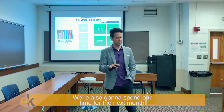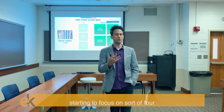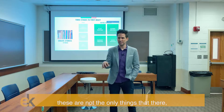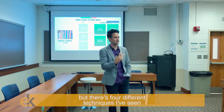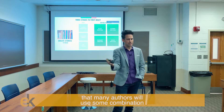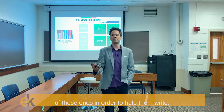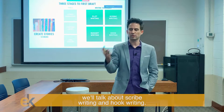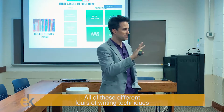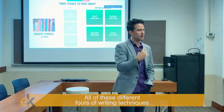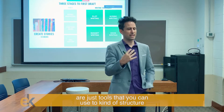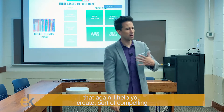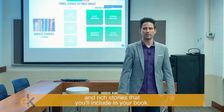We're also going to spend our time over the next month starting to focus on four different writing techniques. These are not the only ways that you're going to write, but there are four different techniques that many authors will use some combination of in order to help them write. We're going to talk about plot writing, nugget writing, scribe writing, and hook writing. All four of these writing techniques are just tools that you can use to structure your writing a little bit and help you create compelling and rich stories that you'll include in your book.